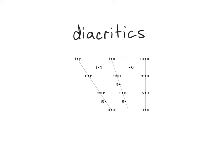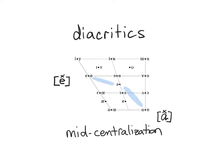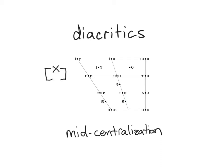A diacritic with a similar function is a small x used over a base symbol to indicate mid-centralization — that is, both centralization and a tongue position that is more mid. So, using this diacritic on a base symbol from the upper left of the chart would indicate a pronunciation that is backer and lower, while using it on a base symbol from the lower left would indicate a pronunciation that is higher and backer, and similarly for the other base symbols in the chart.